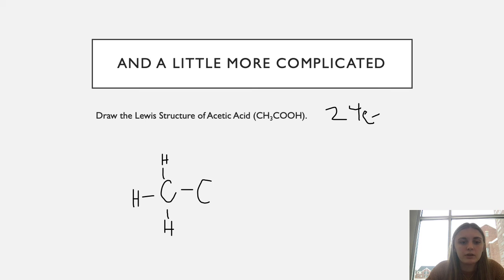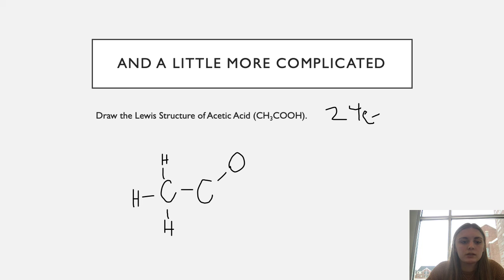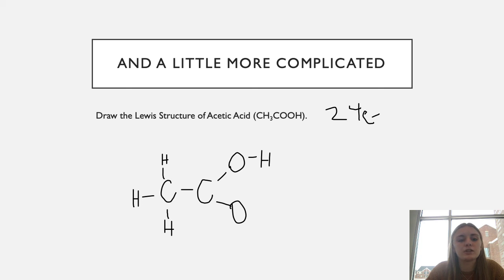Next we have another carbon, which we single-bond to the first carbon — that first carbon's octet is now full with four single bonds, each representing two electrons for a total of eight. Then we add the two oxygens to the second carbon with single bonds, and attach one hydrogen to one of those oxygens. At this point we have used 14 of our 24 valence electrons.